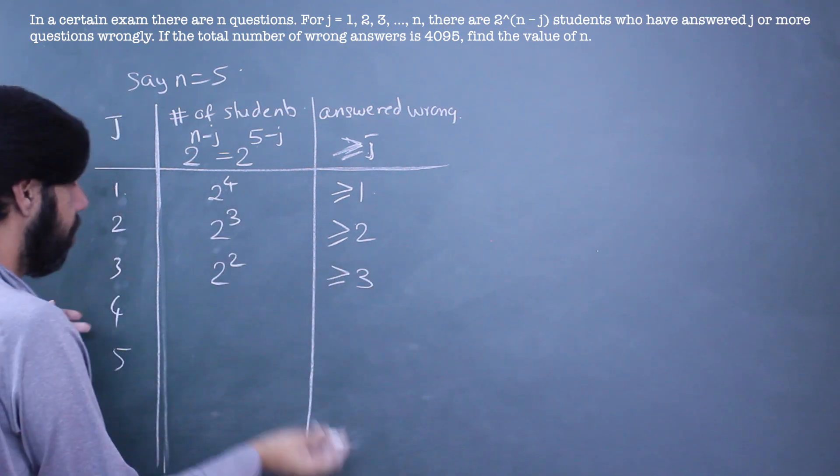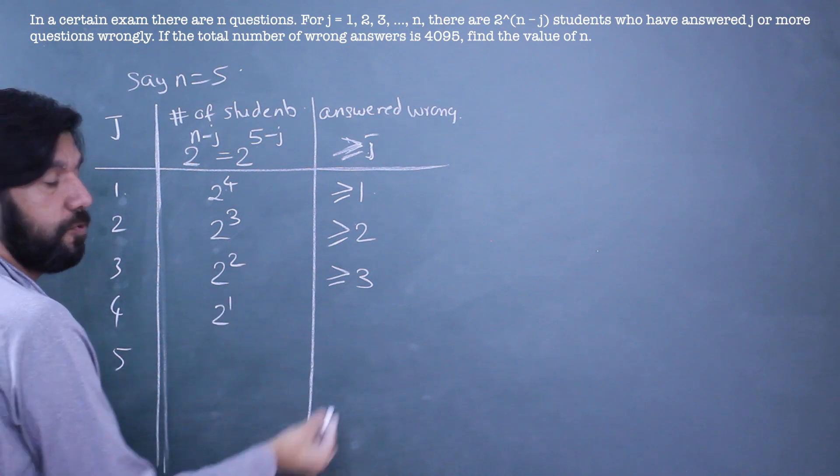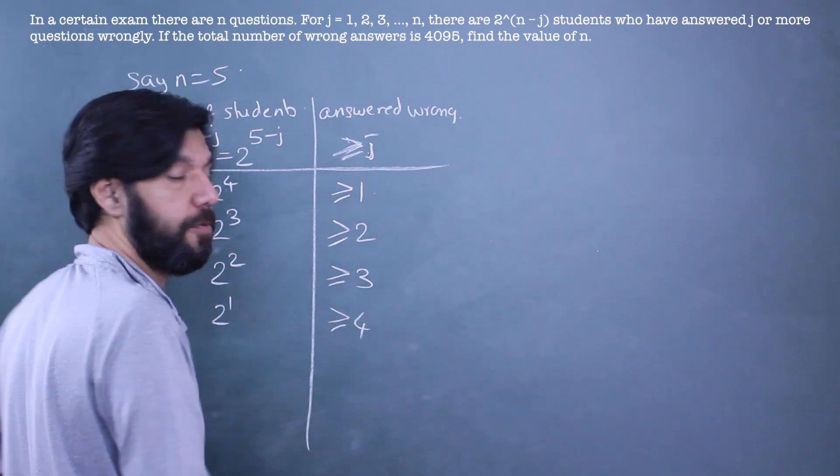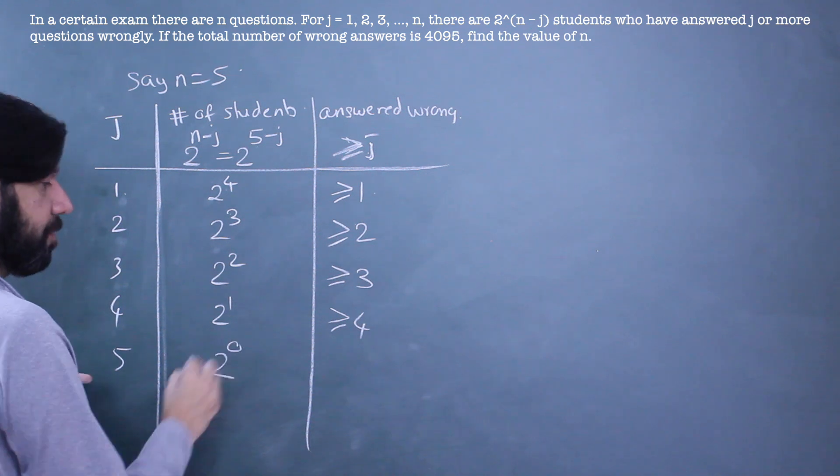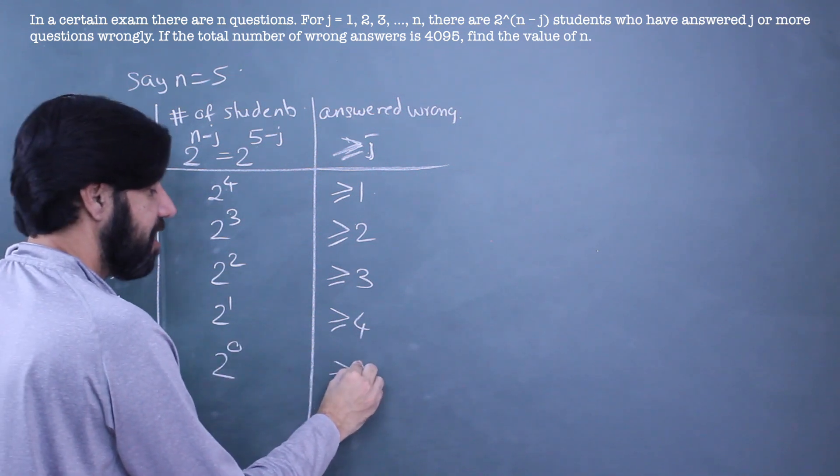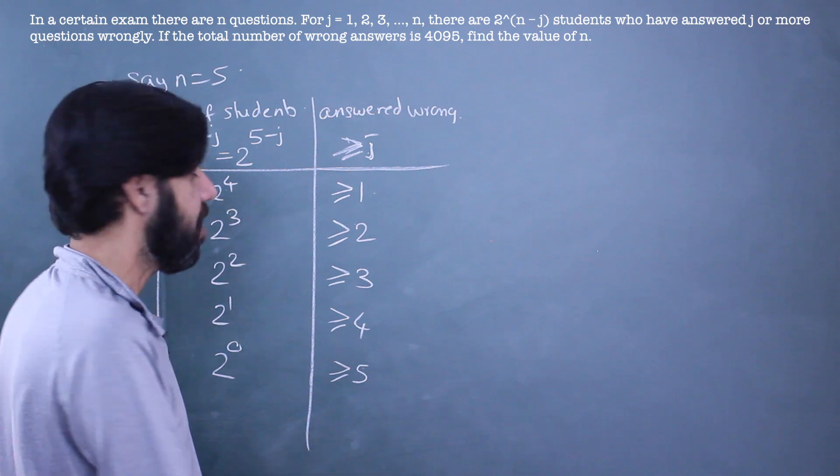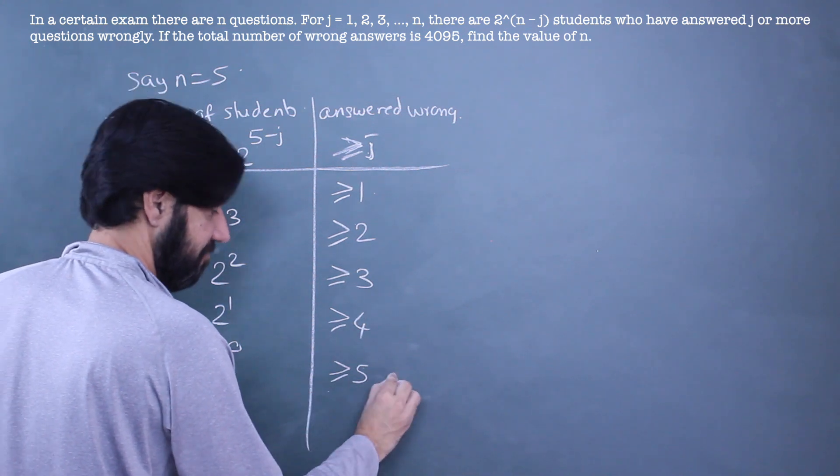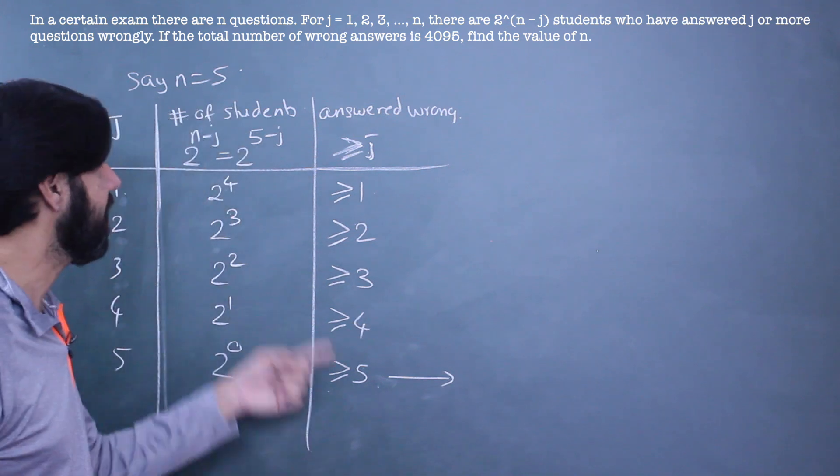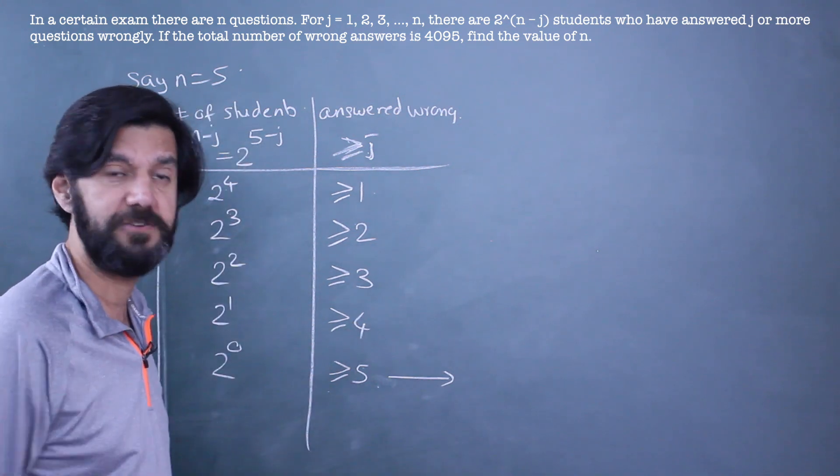These are people who have answered 3 or more than 3 wrong. 2^1 are people who have answered 4 or more than 4 wrong. 2^0 are people who have answered 5 or more than 5 wrong. But what is 5 or more than 5? This is exactly 5. There are only 5 questions, there aren't more than 5 questions.